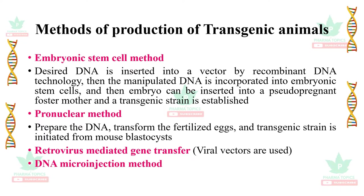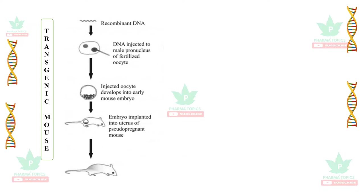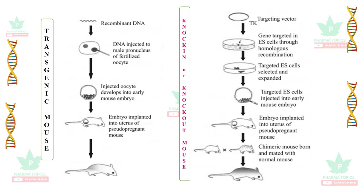Other methods include retrovirus-mediated gene transfer, which involves viral vectors, and the DNA microinjection method. In the transgenic mouse procedure, recombinant DNA is injected into the fertilized oocyte, the oocyte develops into an embryo, and that is placed in a pseudopregnant mouse that develops and delivers a transgenic mouse.